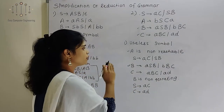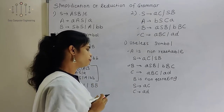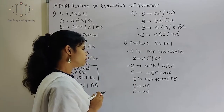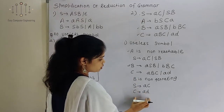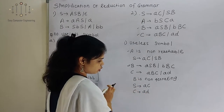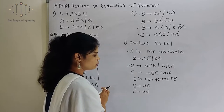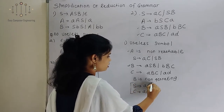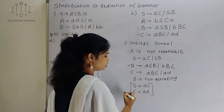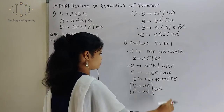After removing non-reachable and non-generating useless symbols, the third step is to find unit production and epsilon production. In this grammar there won't be any unit production or epsilon production. So this is my final simplification of grammar — this is the final answer.